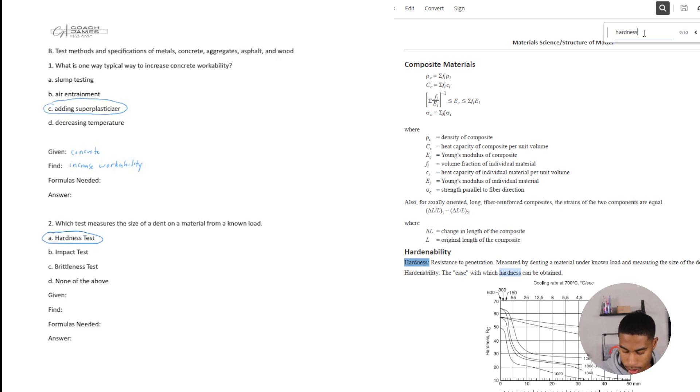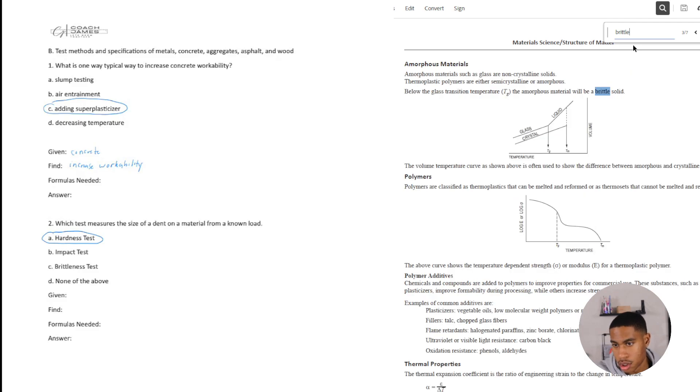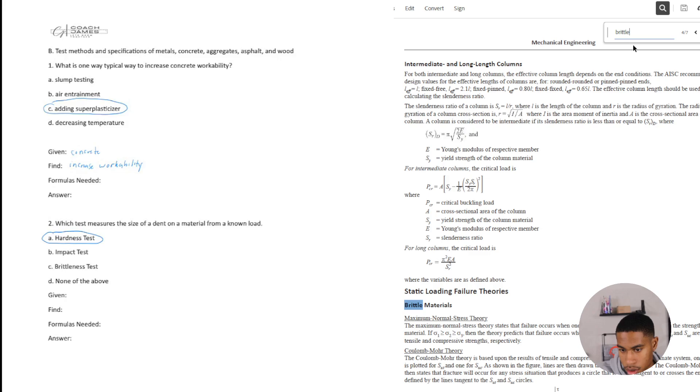We could also look up what impact test is. All right, impact test does come up. Okay, the impact test is used to find energy required to fracture and identify ductile to brittle transition. Okay. So it's dealing with energy, brittleness, and temperature. All right, brittleness.